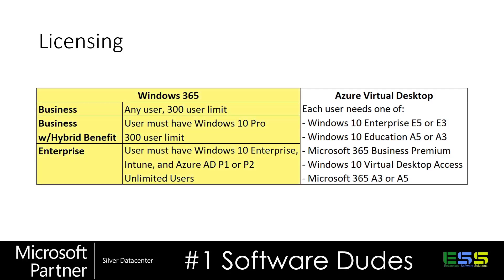For Windows 365, on the left-hand side of this table, there are essentially two levels: Business and Enterprise. Business has a 300-user limit; Enterprise has no limit but has some higher requirements. At the straight Business level, you can assign a Windows 365 license to any user, up to 300 of them. If you're utilizing hybrid benefits, each of those users must already have a Windows 10 Pro license. For Enterprise, each user must have a Windows 10 Enterprise license, Intune, and an Azure AD P1 or P2 license, and you can have as many of those users as you want.